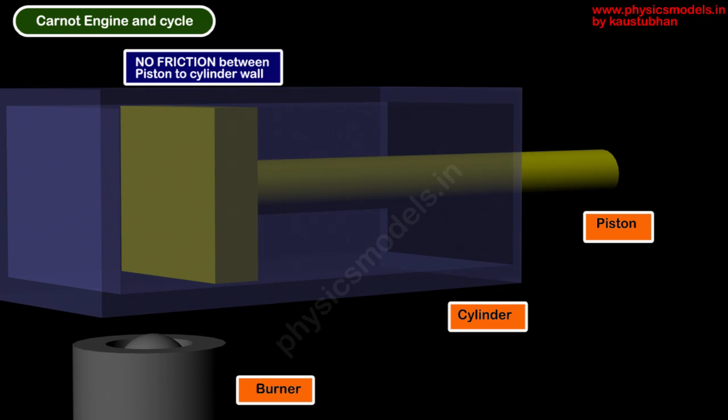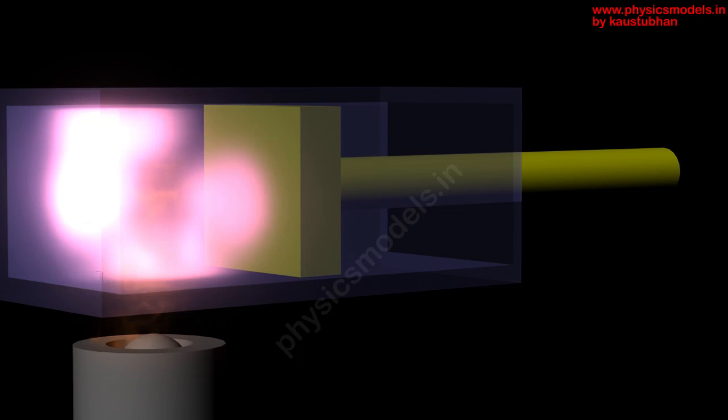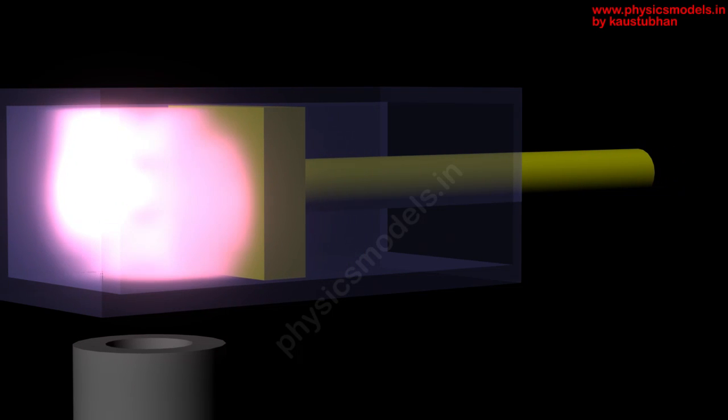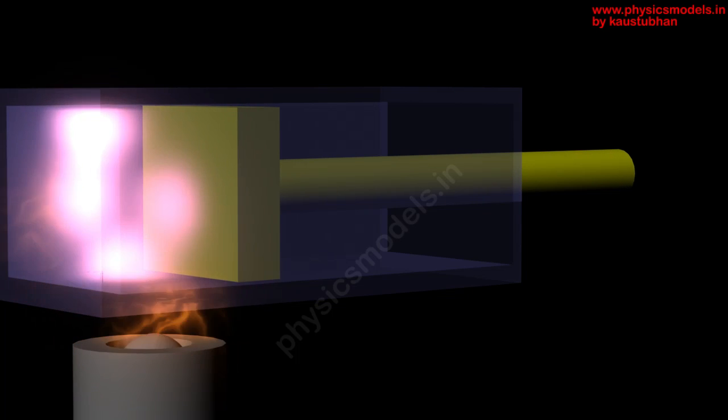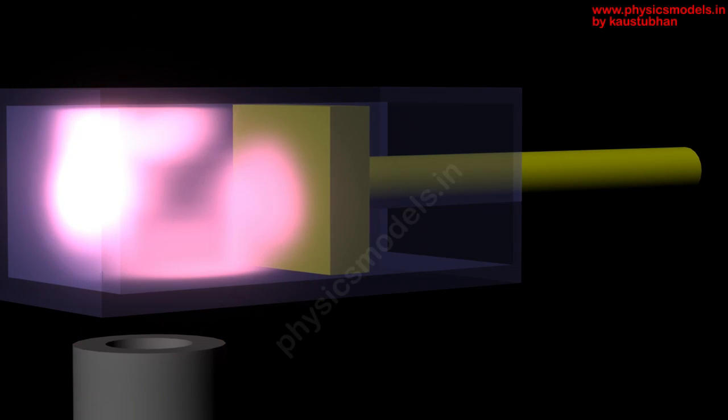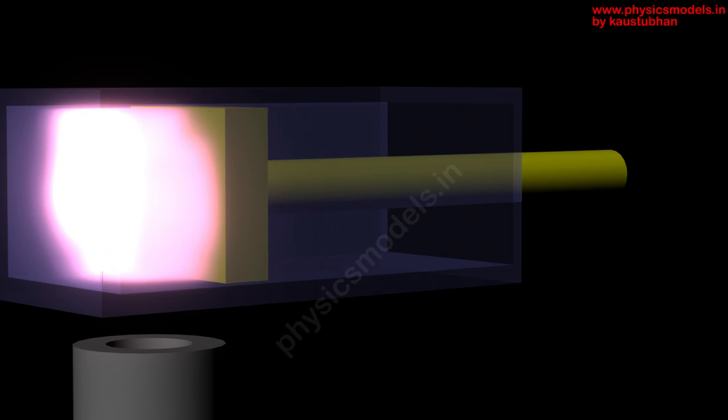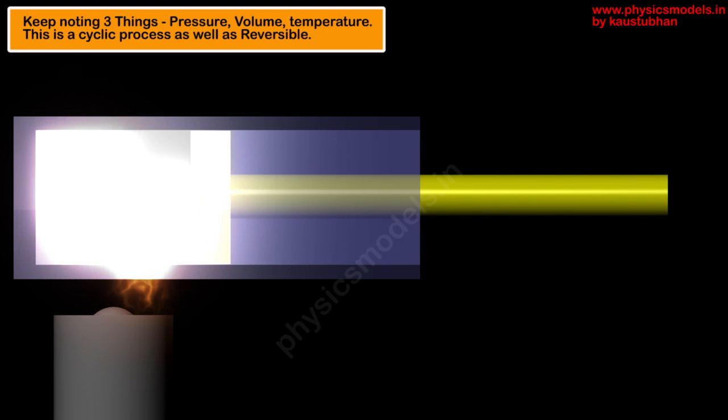As per the first law of thermodynamics, we have fired up the gas and the piston is moving out. The gas does work on the piston. The piston moves out to its extreme position and then moves back to compress the gas. This expansion and compression constitute one cycle. The Carnot engine is a cyclic process engine. The fire is switched off during compression.